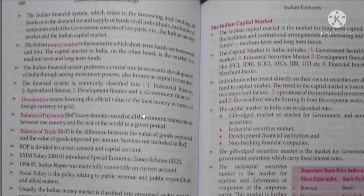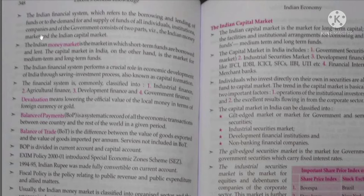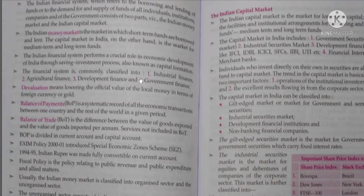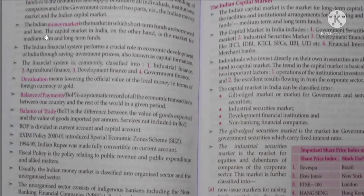The Indian Financial System, which refers to the borrowing and lending of funds, or to the demand for and the supply of funds for all individuals, institutions, companies and the government, consists of two parts: the Indian Money Market and the Indian Capital Market. The Indian Money Market is the market in which short-term funds are borrowed and lent. The Capital Market in India, on the other hand, is the market for medium-term and long-term funds.